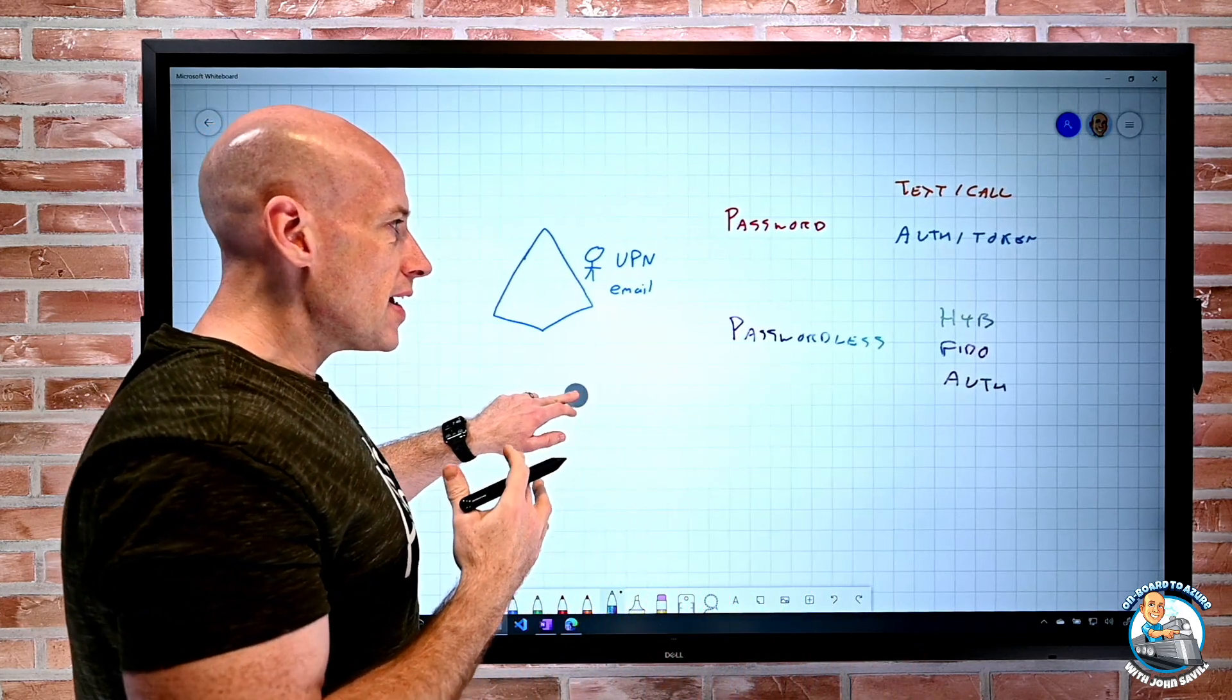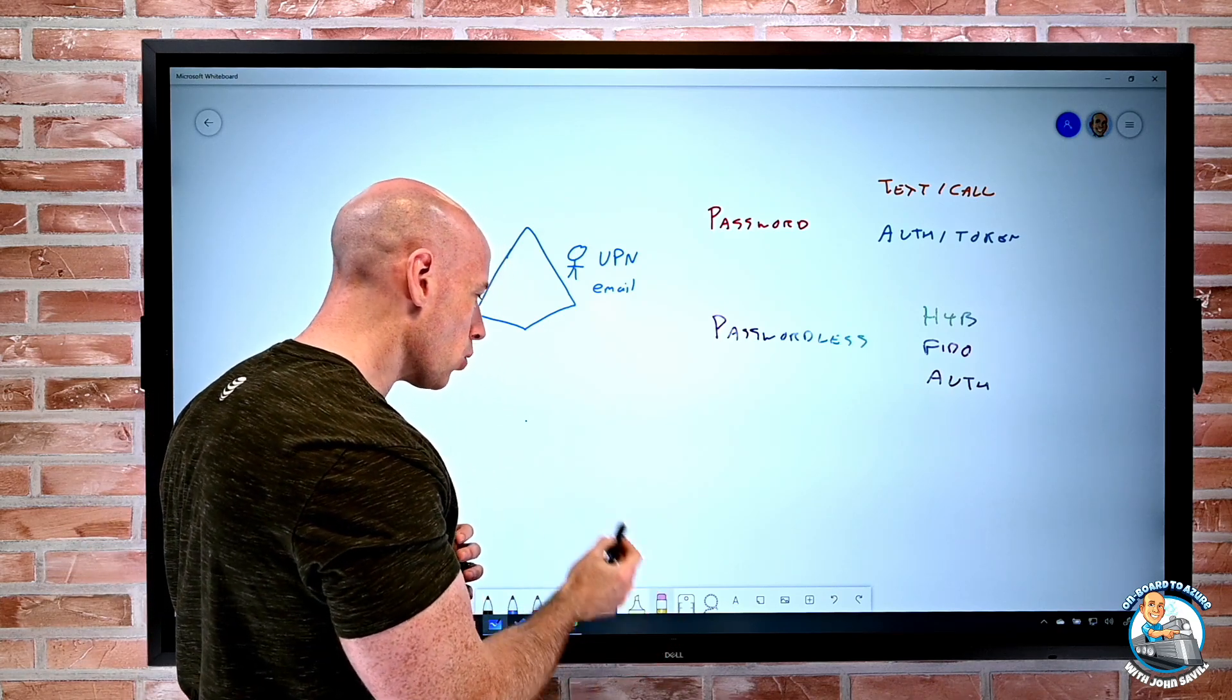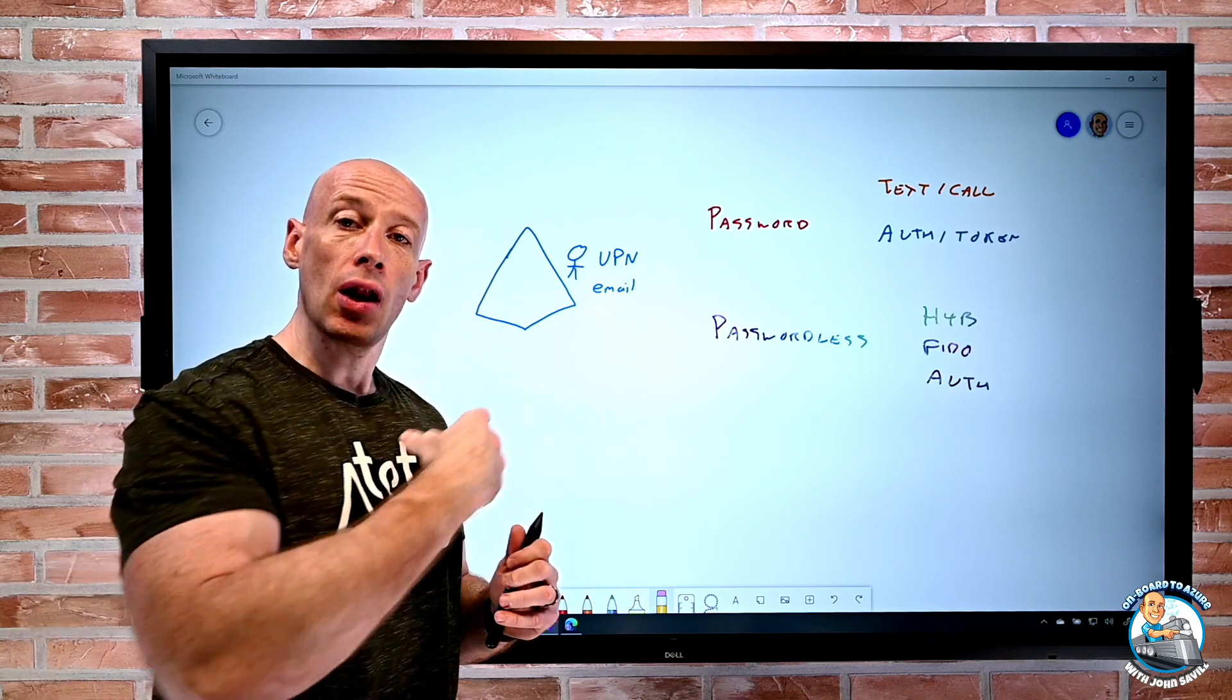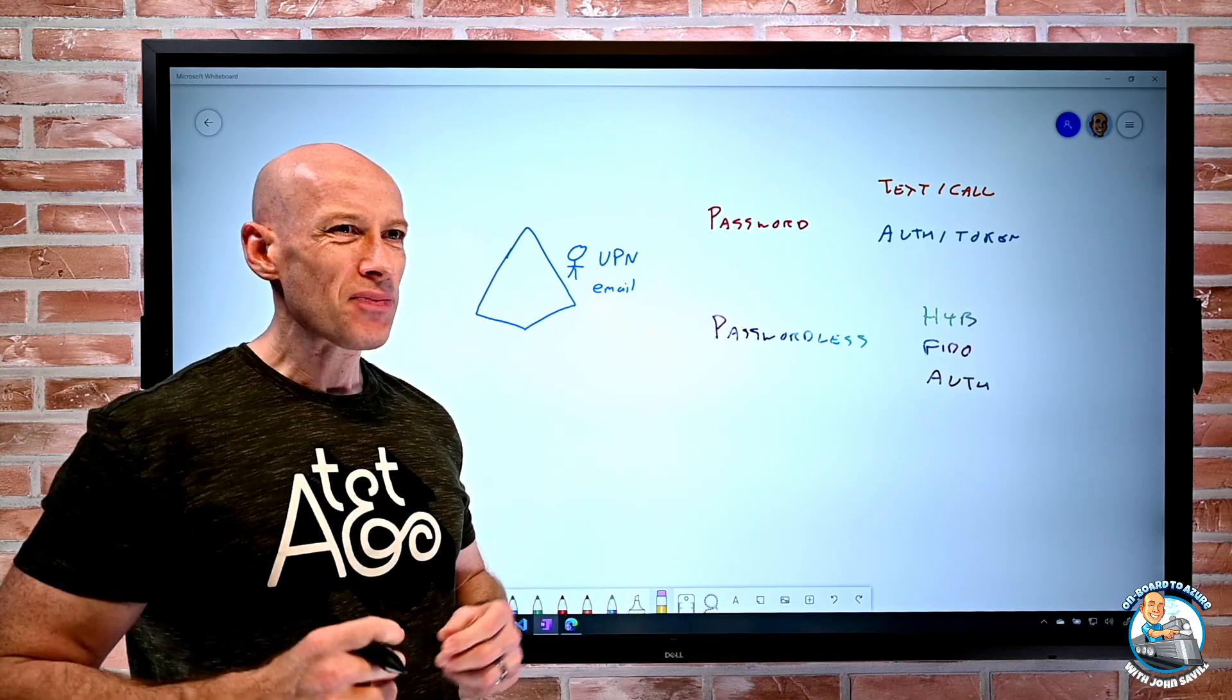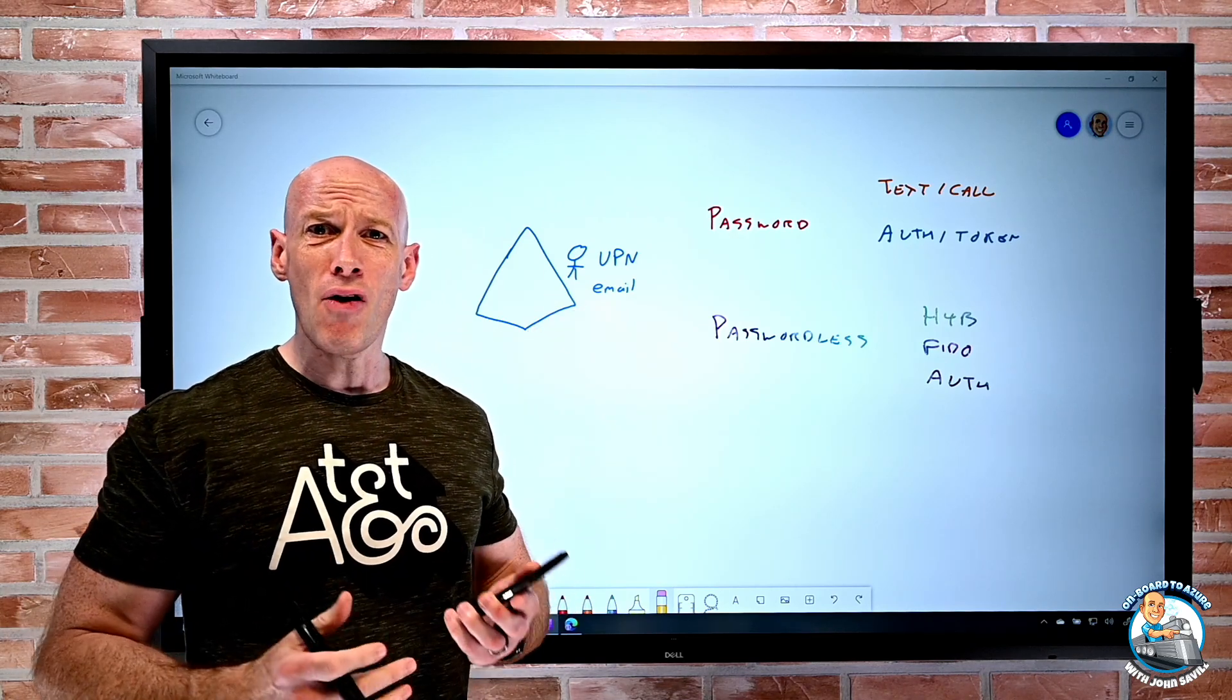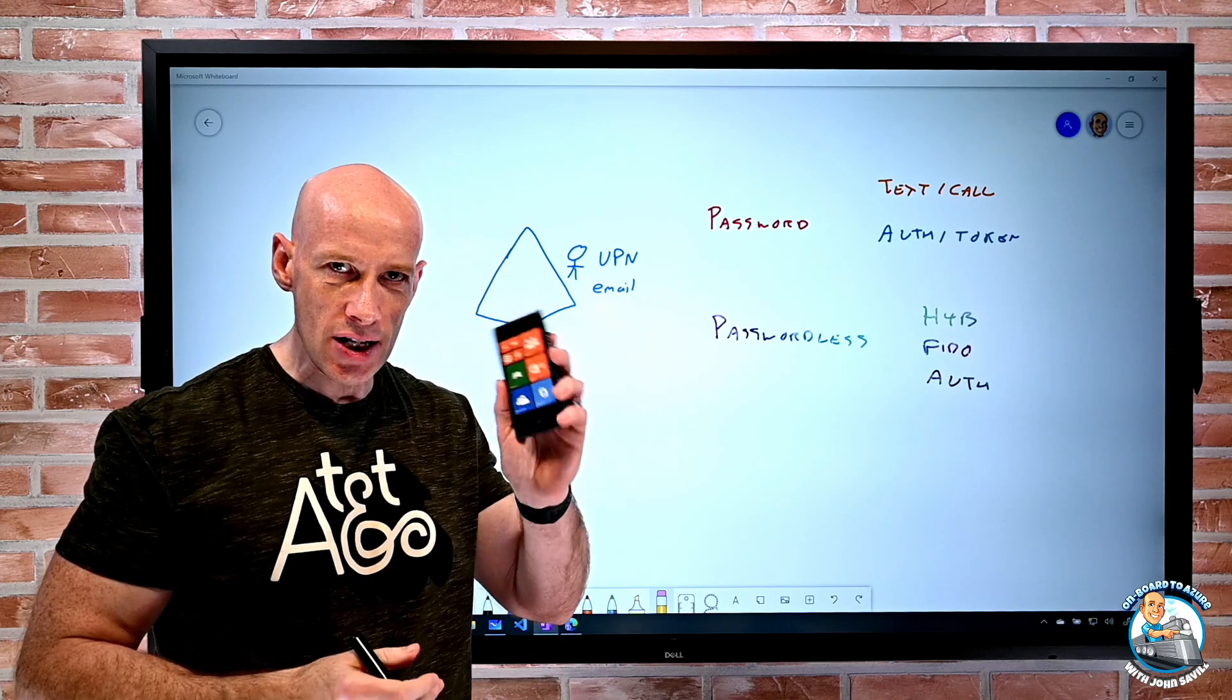Now for all of these, the user needs to understand their username. I may have a portion of the population where that doesn't really make sense. Maybe it's frontline workers, people in a store, in a factory, whatever. They don't really use the IT systems very much. They have their phone, they know their phone number. They don't really want to bother about having to know a password or their UPN. They don't have an email address, they just have their phone.